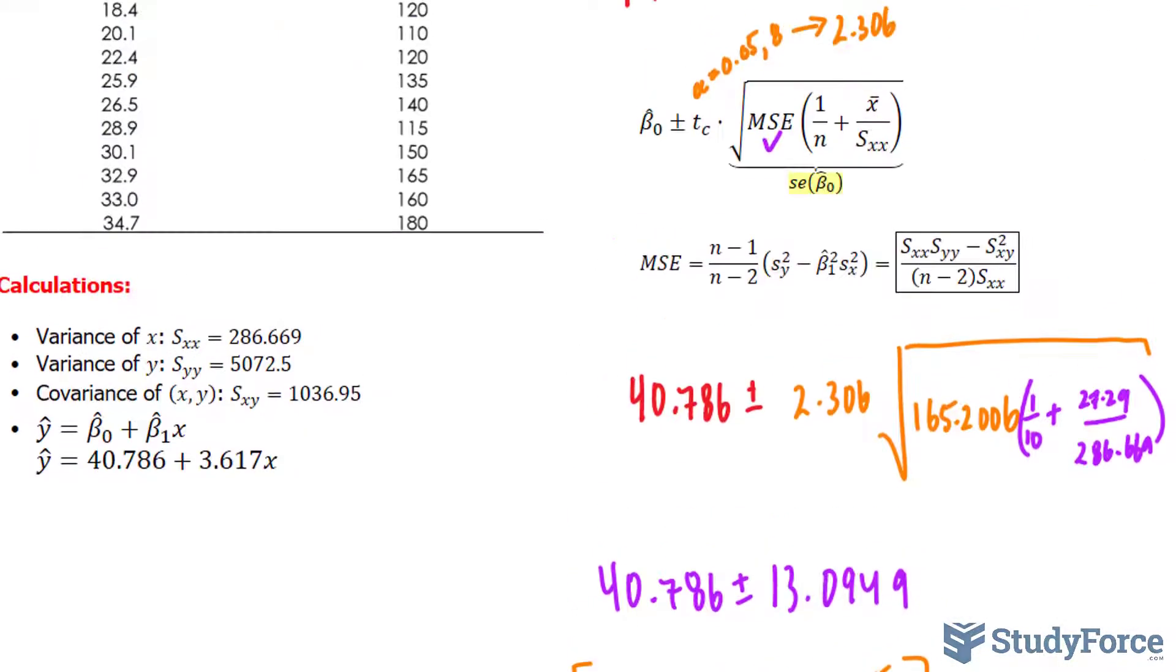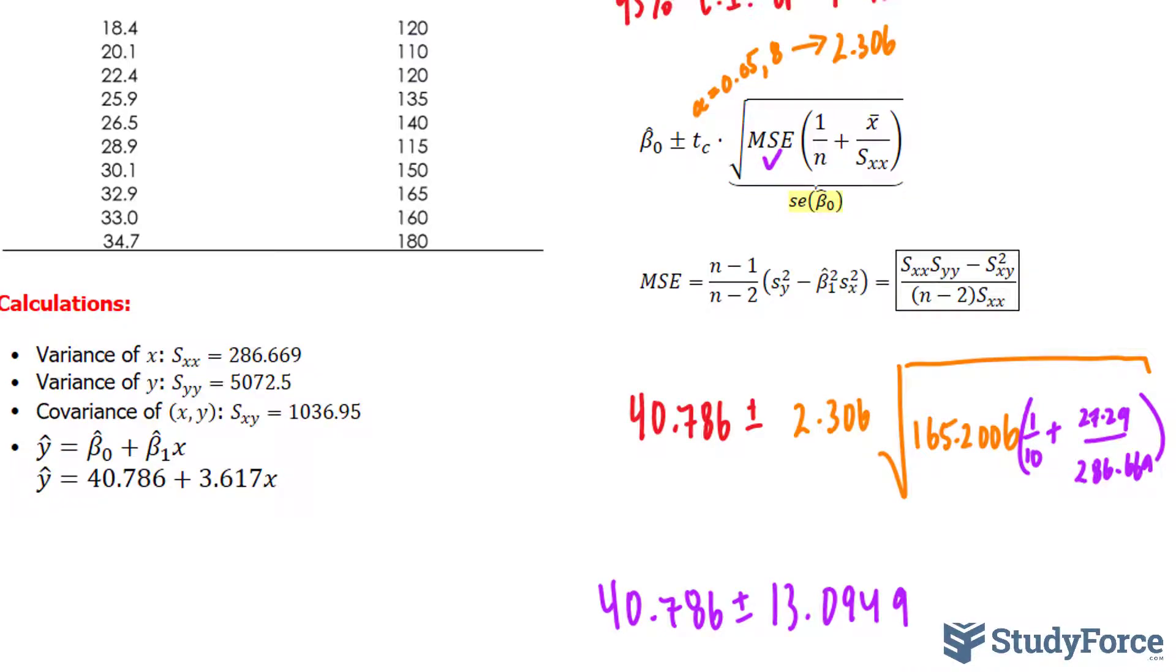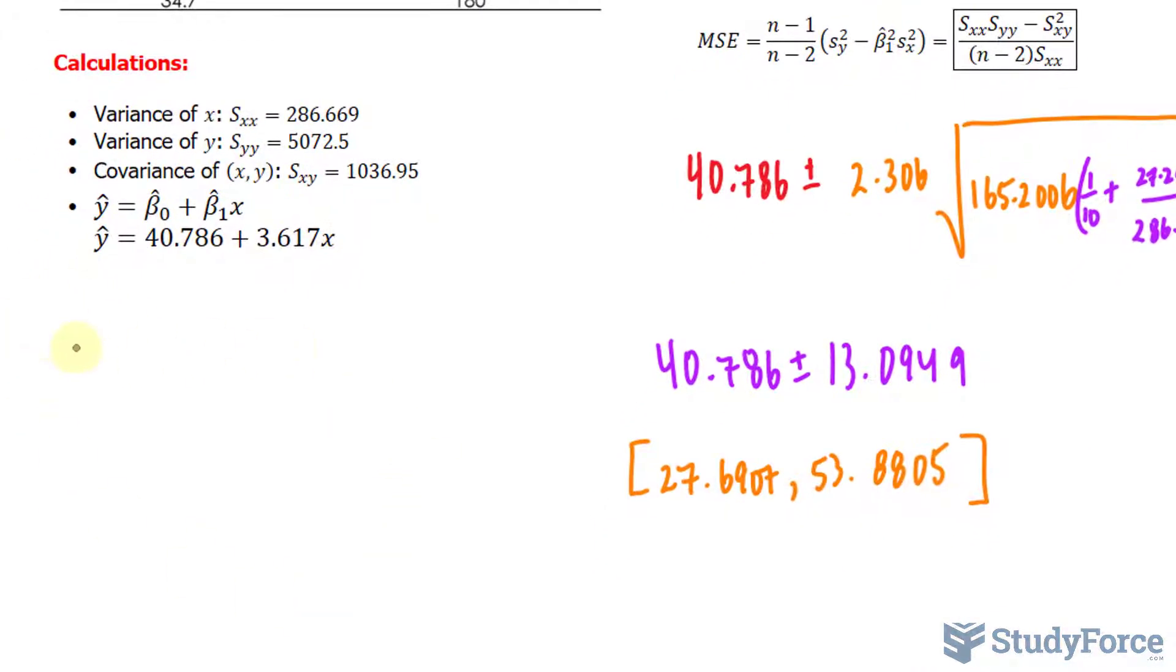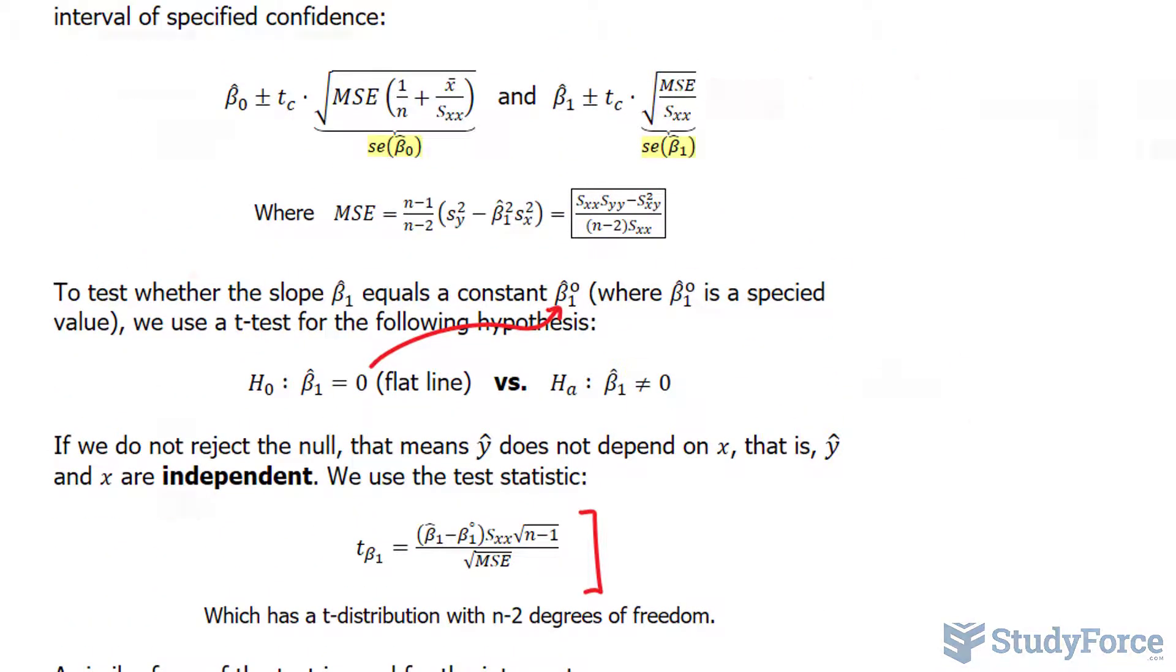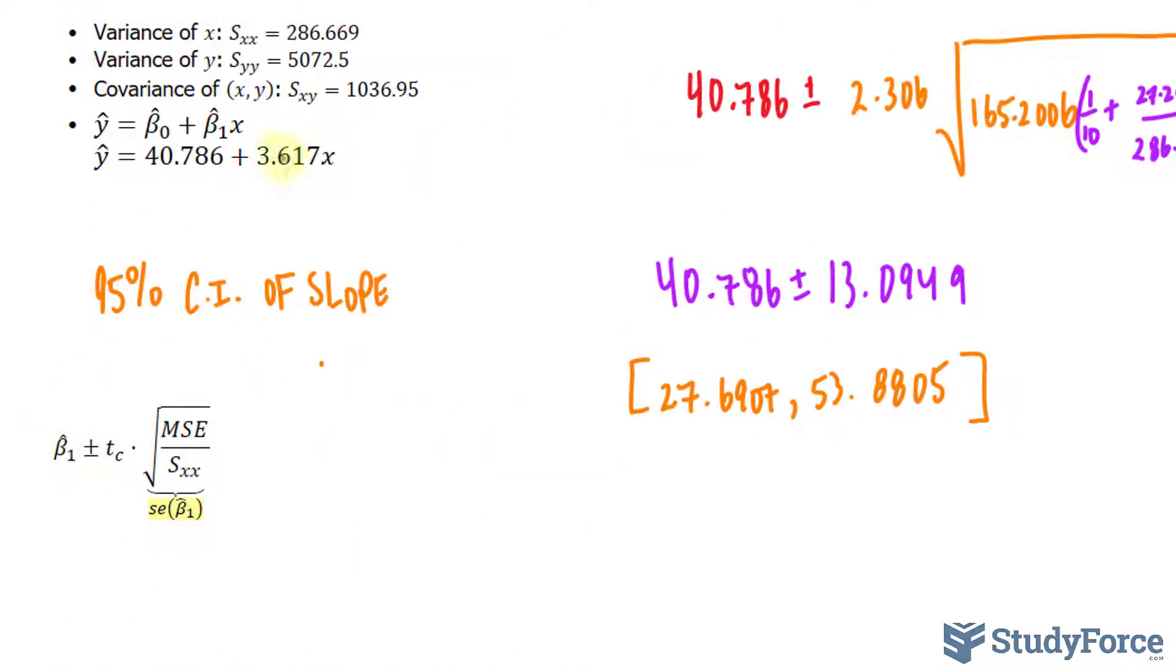Now we have to do the same sort of calculation but for the slope. So I'll do my work over here, and the formulas that were introduced earlier, I'll copy them underneath. As you see, this consists of the slope, 3.617 plus minus the same t-critical value as before, 2.306, times the square root of the mean square error, that's that value, I don't need to recalculate it.